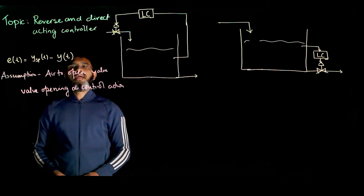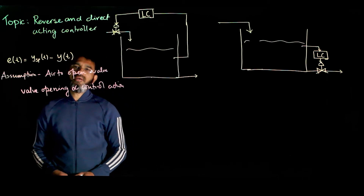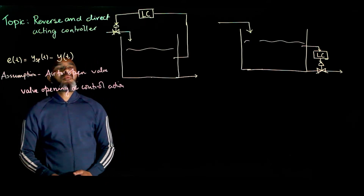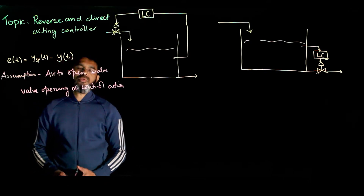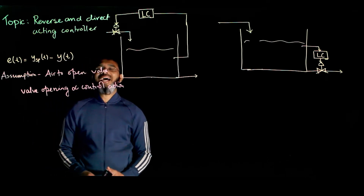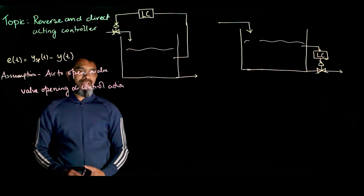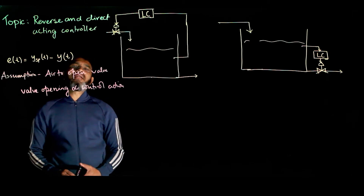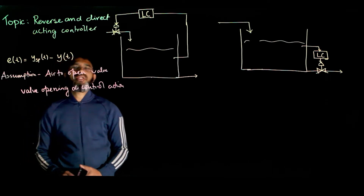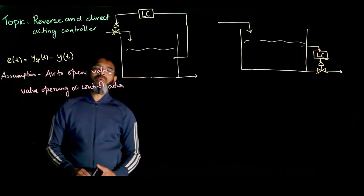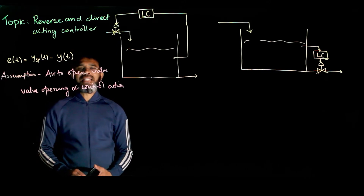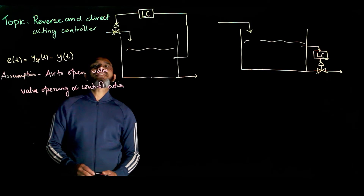The controller gain has a value and also a sign. In commercial PID applications and also in loop tuning software, it does not ask you for the sign of the controller gain. Meaning, if KC is supposed to be negative 12, you input the value as 12 and then you specify whether it is direct acting or reverse acting.